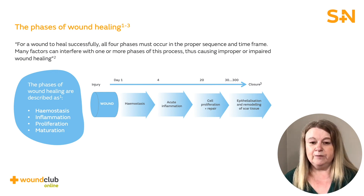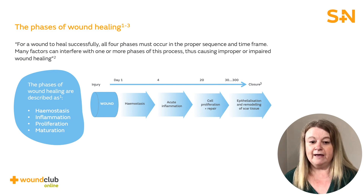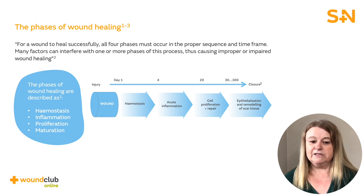The wound healing process is a complex series of events that starts with an injury and can continue for weeks, months or even years. The phases of wound healing are: haemostasis, acute inflammation, cell proliferation and repair, and epithelialisation and remodelling of scar tissue. For a wound to heal successfully, all four phases must occur in the proper sequence and time frame.